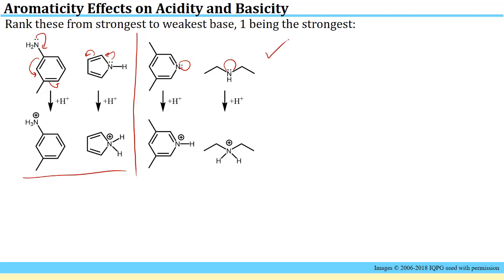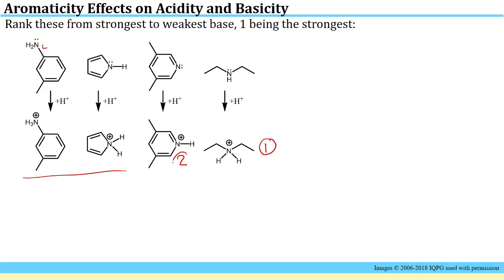Focusing on the two species whose lone pairs are not tied up in resonance, neither loses aromaticity or resonance stabilization upon protonation. The key difference is that the nitrogen in pyridine is sp2 hybridized, while the other is sp3 hybridized. An sp2 hybridized nitrogen is more electronegative, so it's harder to pull electrons away from it. That makes the sp3 hybridized nitrogen our strongest base. So we've identified the two strongest bases as those without lone pairs tied up in resonance.